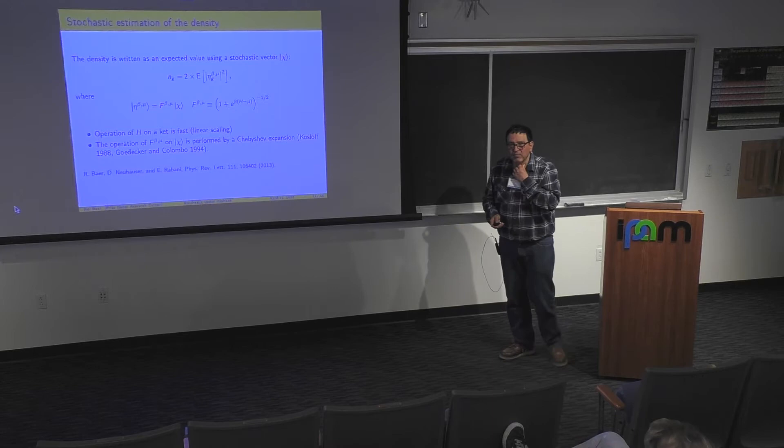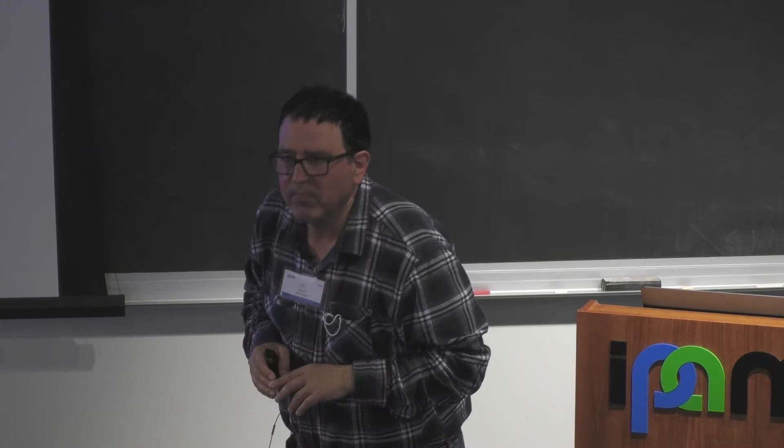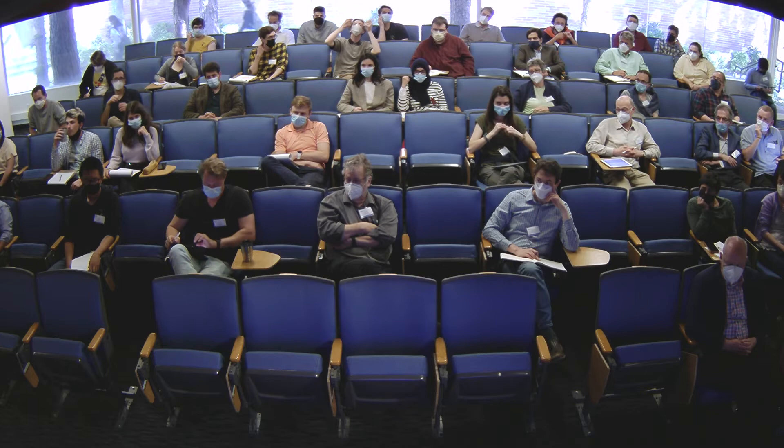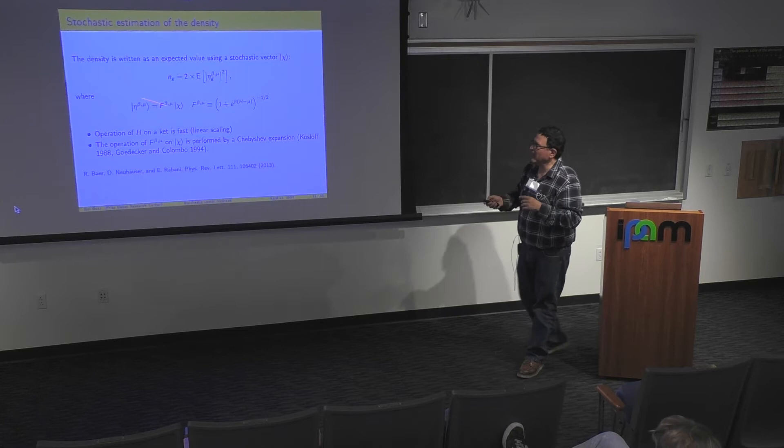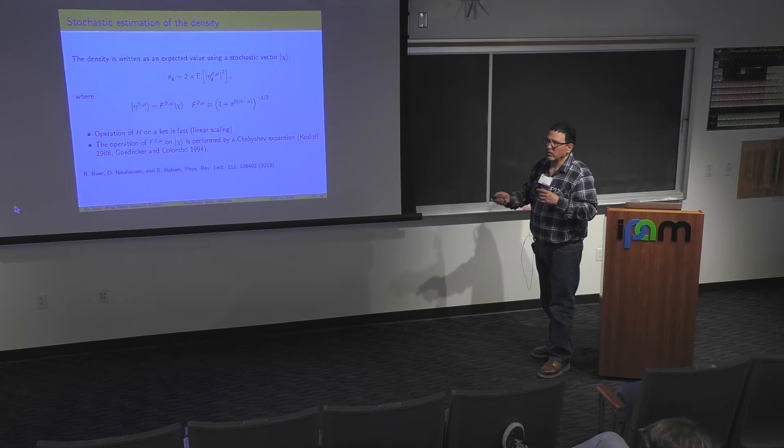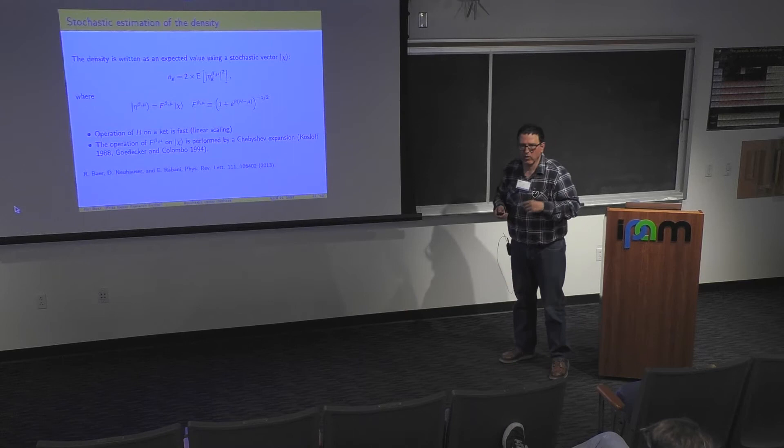Question from audience: are the χ vectors the random variables? Yes, χ is a random vector — for example, ±1 on each grid point with equal probability. It's a very uninformative function on the grid with no structure, but once you operate with F you get an estimate for the density. With two or more functions you get a better estimate.